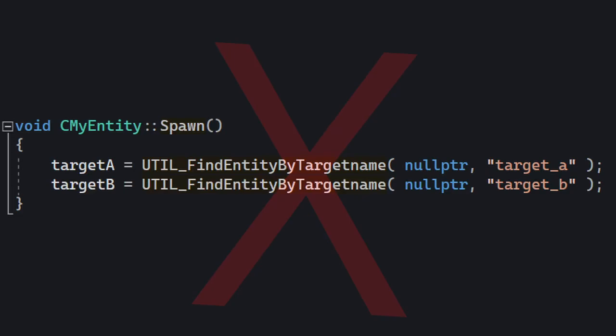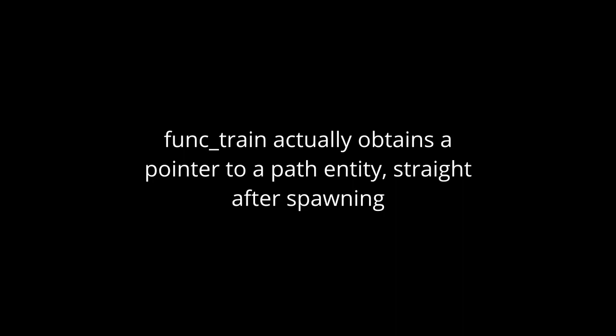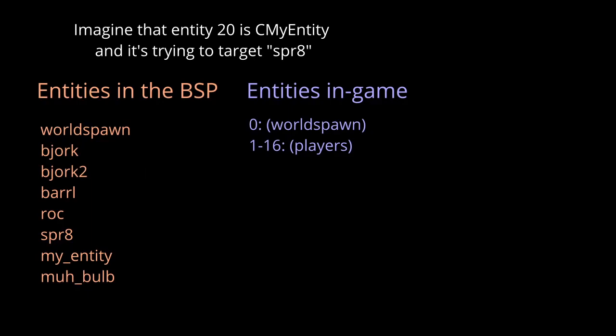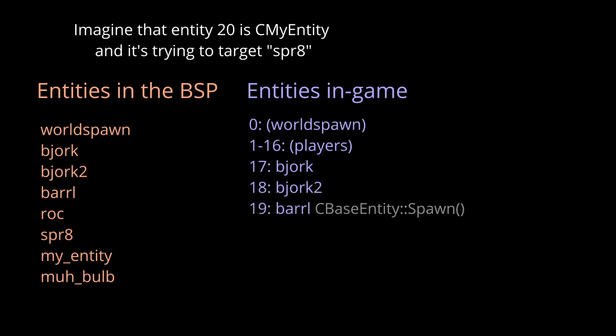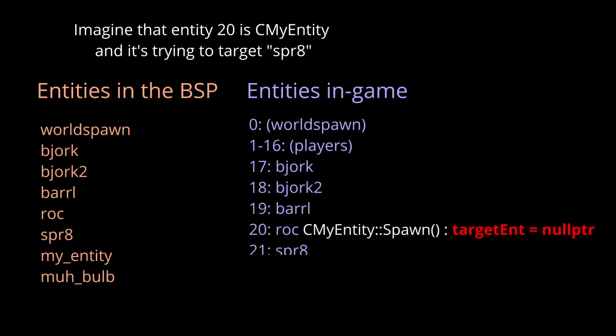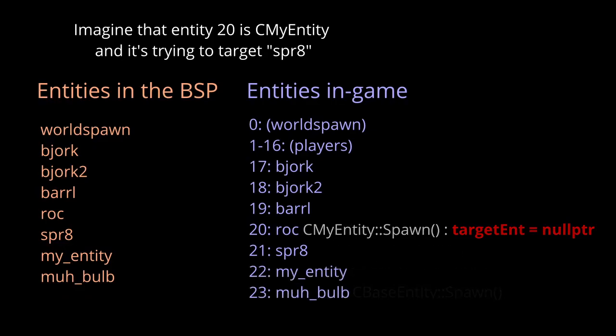If you're using finding functions in the use method or basically anywhere post-spawn, this is okay. But let's say you have an entity that has several pointers to other entities and you want to initialize these pointers once when the entity spawns for some performance reasons — well, it's probably not going to work because your entity will spawn before the entities it is meant to target. Remember that entities spawn sequentially, not all at once.